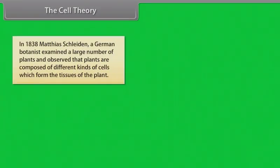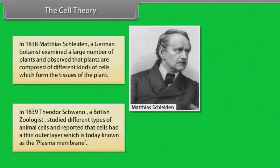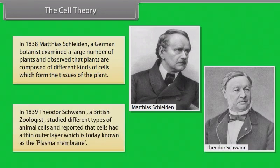In 1838, Matthias Schleiden, a German botanist, examined a large number of plants and observed that plants are composed of different kinds of cells which form the tissues of the plant. In 1839, Theodor Schwann, a British zoologist, studied different types of animal cells and reported that cells had a thin outer layer, which is today known as the plasma membrane.